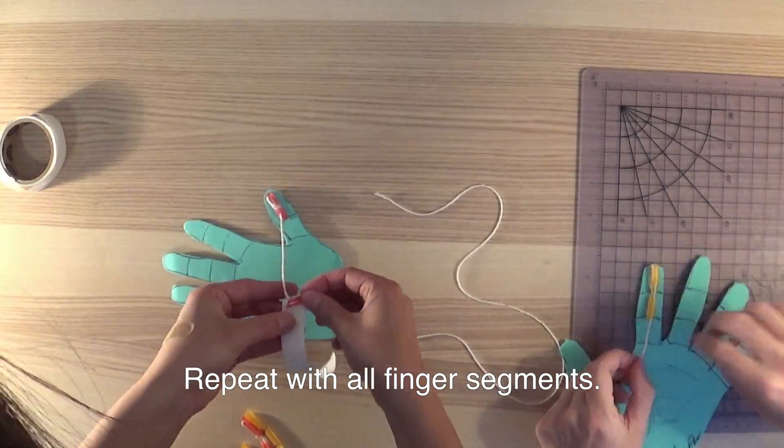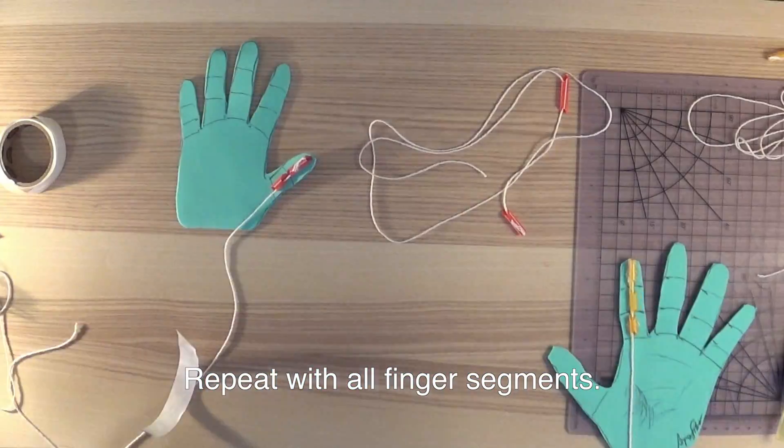Each finger segment should be glued down individually to the foam hand, making sure that there is space between the segments.